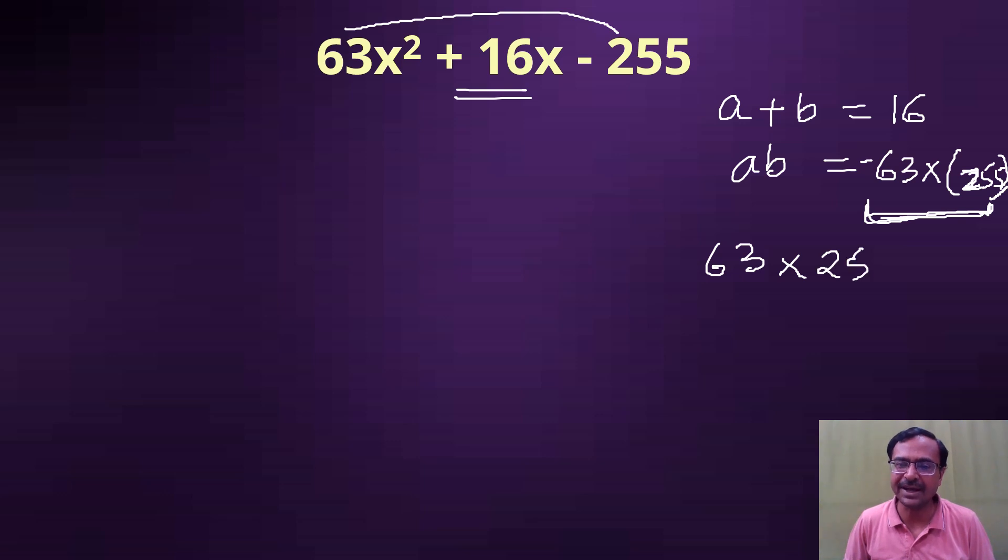But 63 multiplied by 255 - I'll take care of the negative sign later. Let's split 63 and 255 into its factors. So 63 is 9 into 7, which is 3 × 3 × 7. And then we have 255, which is divisible by 3 again, and then we have 85.